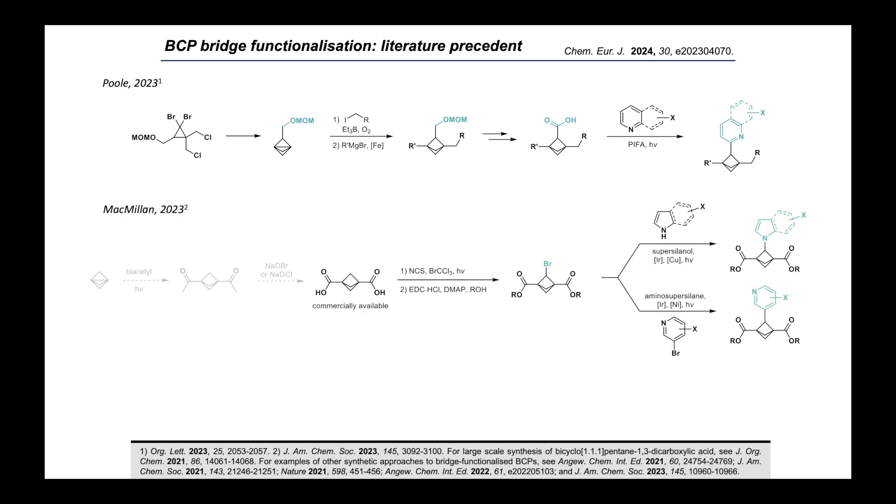Finally, the MacMillan group at Princeton have also made a significant contribution to this area. Starting with this commercially available 1,3-diacid, which in turn comes from the addition of diacetyl across the parent propellane, followed by haloform oxidation of the resulting BCP diketone, they accessed BCP monobromides by optimization of a controlled C-H bromination on the bridge. From there, they were able to apply their group's photoredox halogen atom transfer methodologies to allow amination using acidic nitrogen nucleophiles and also arylation through a formal cross-electrophile coupling with aryl bromides.